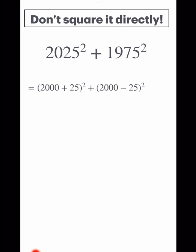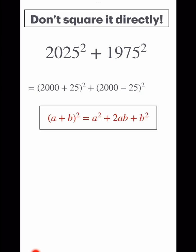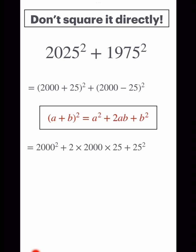Now we use this identity: (a + b)² equals a² plus 2ab plus b². Apply it to 2025 squared, where a is 2000 and b is 25.